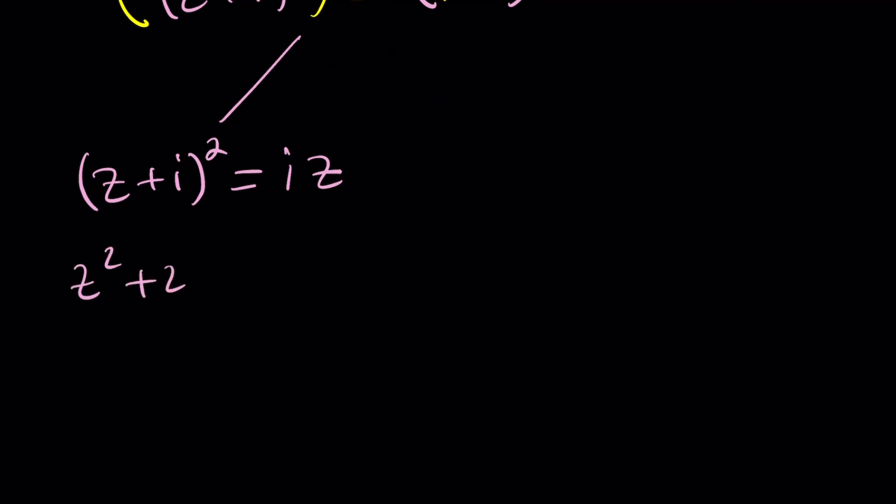Z squared plus 2 IZ plus I squared, which is negative one. Equals IZ. Bring it over. You're going to get Z squared plus IZ minus one equals zero. Obviously, we can solve this using the quadratic formula.